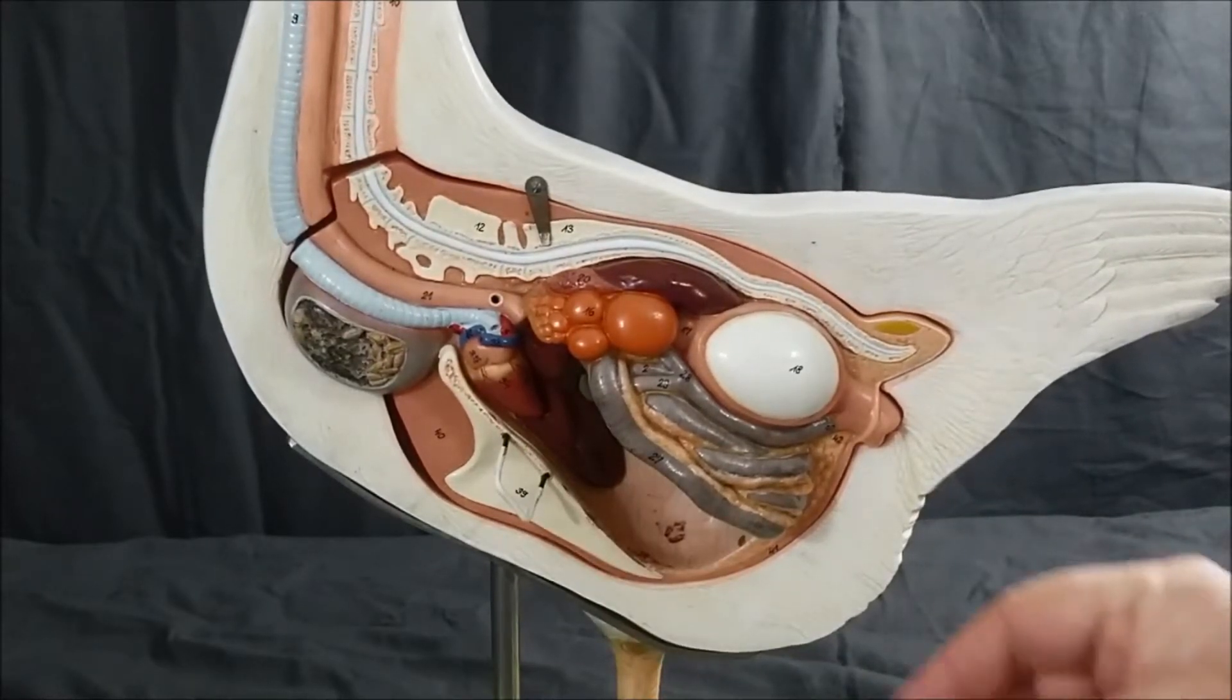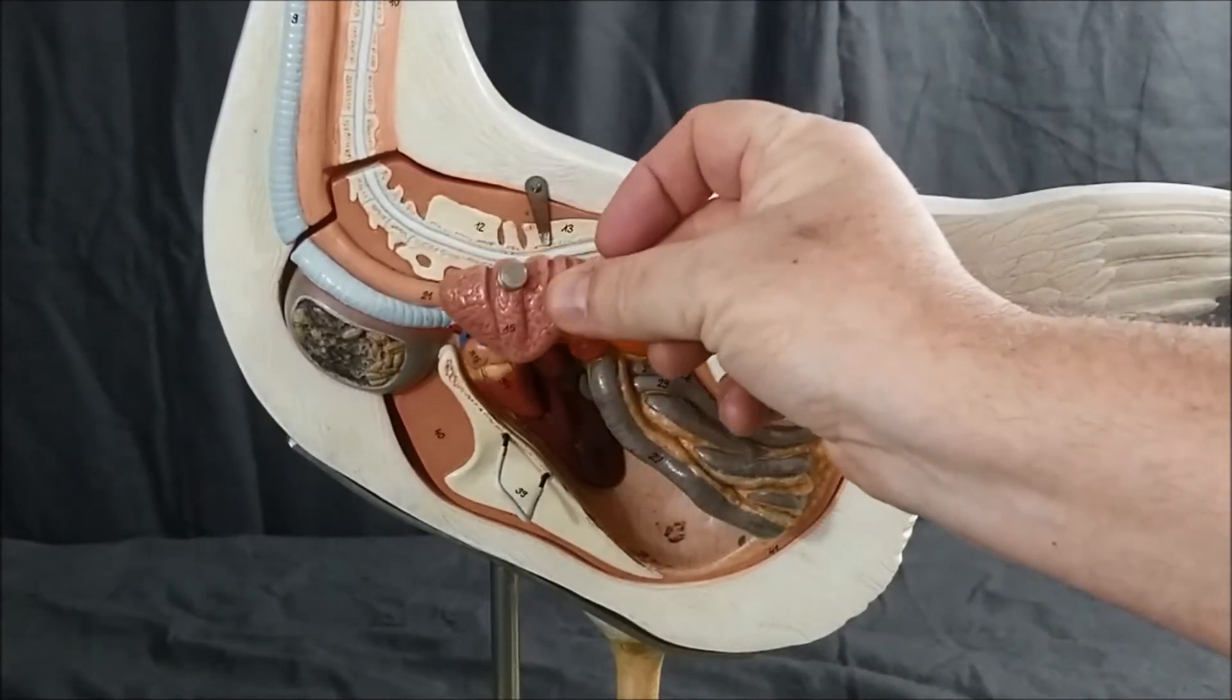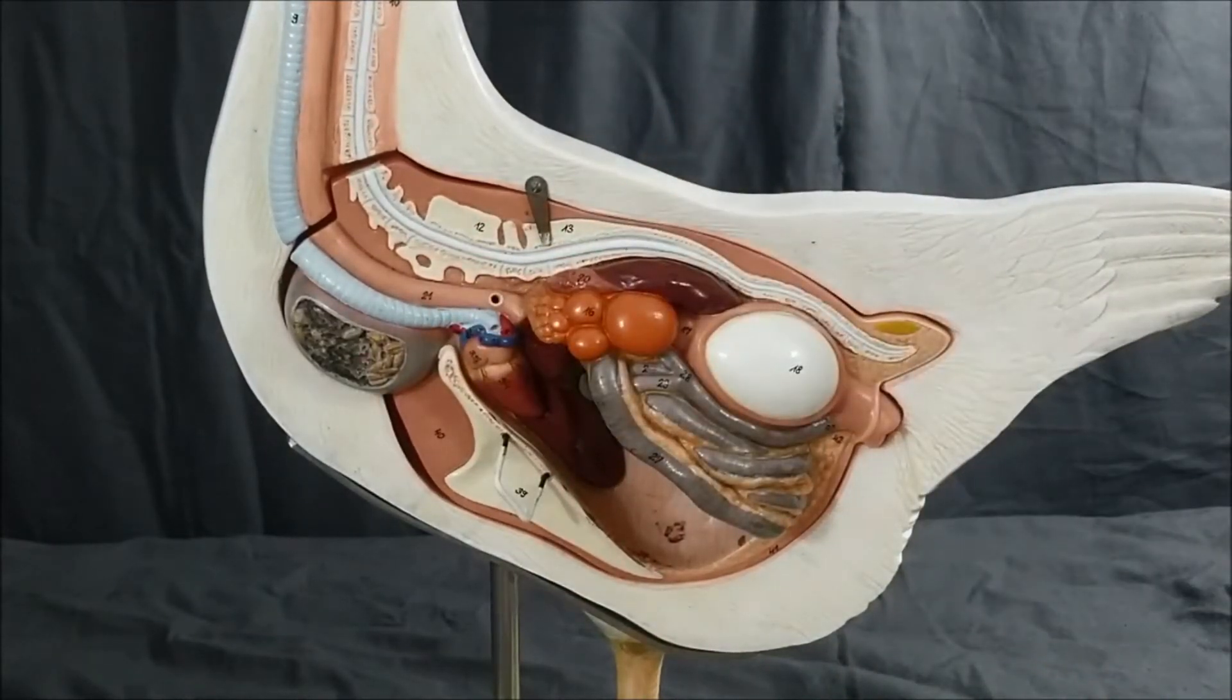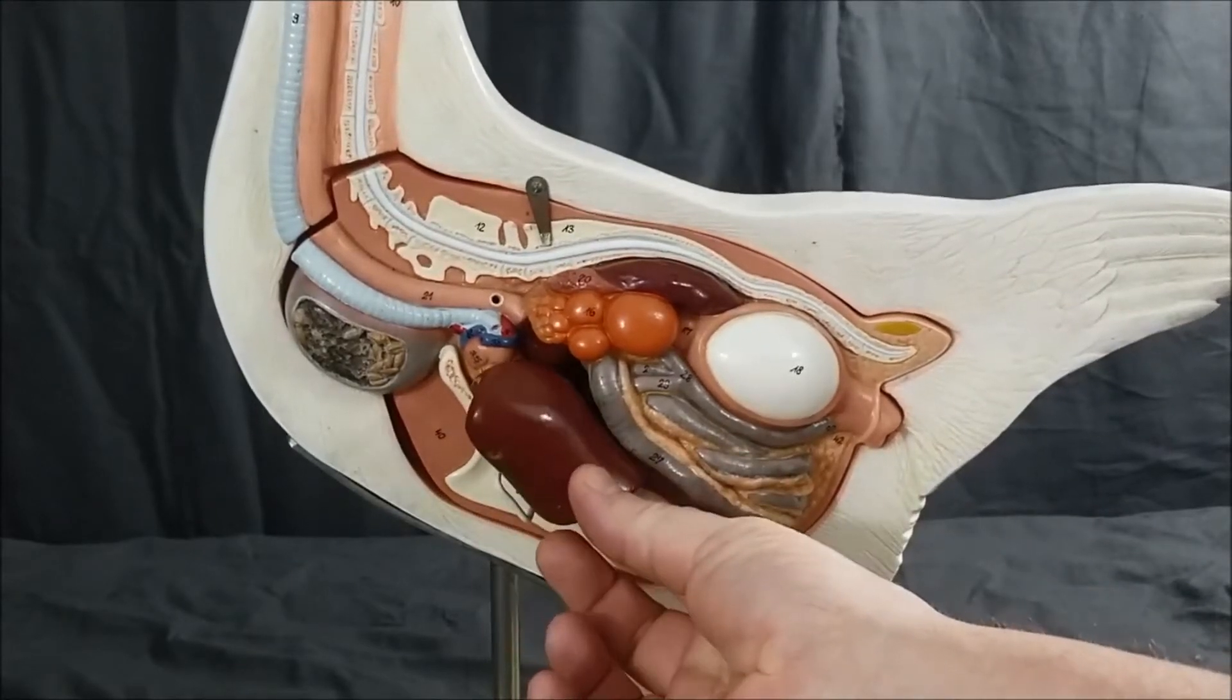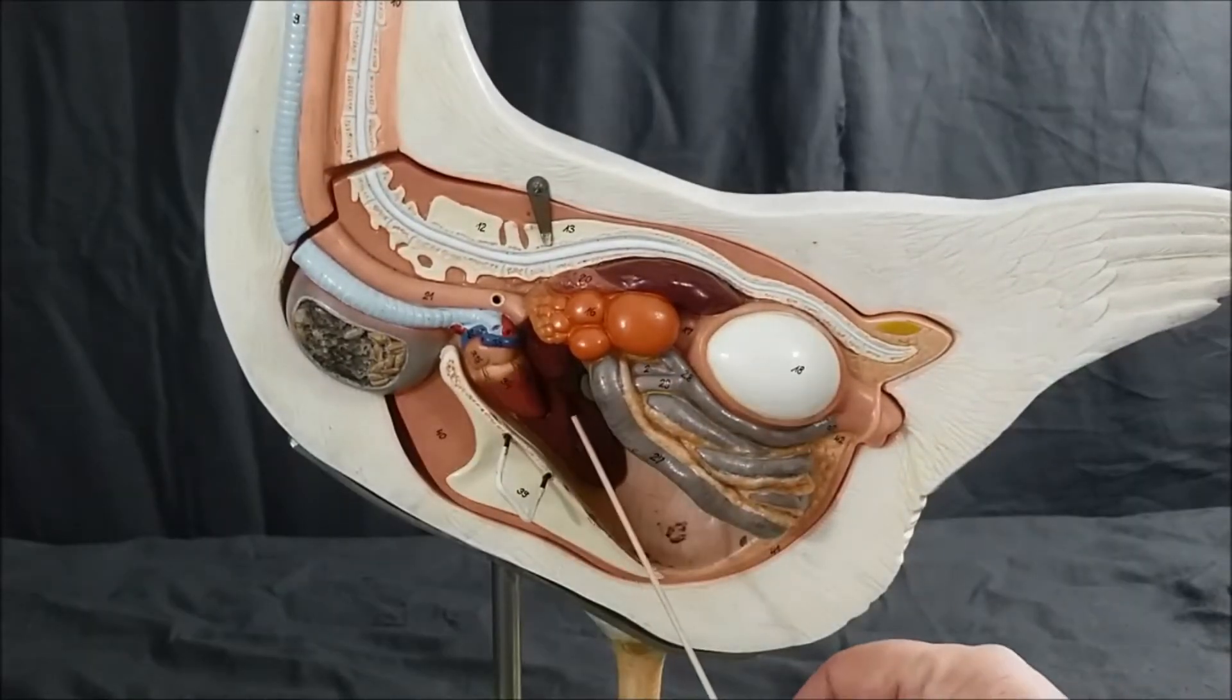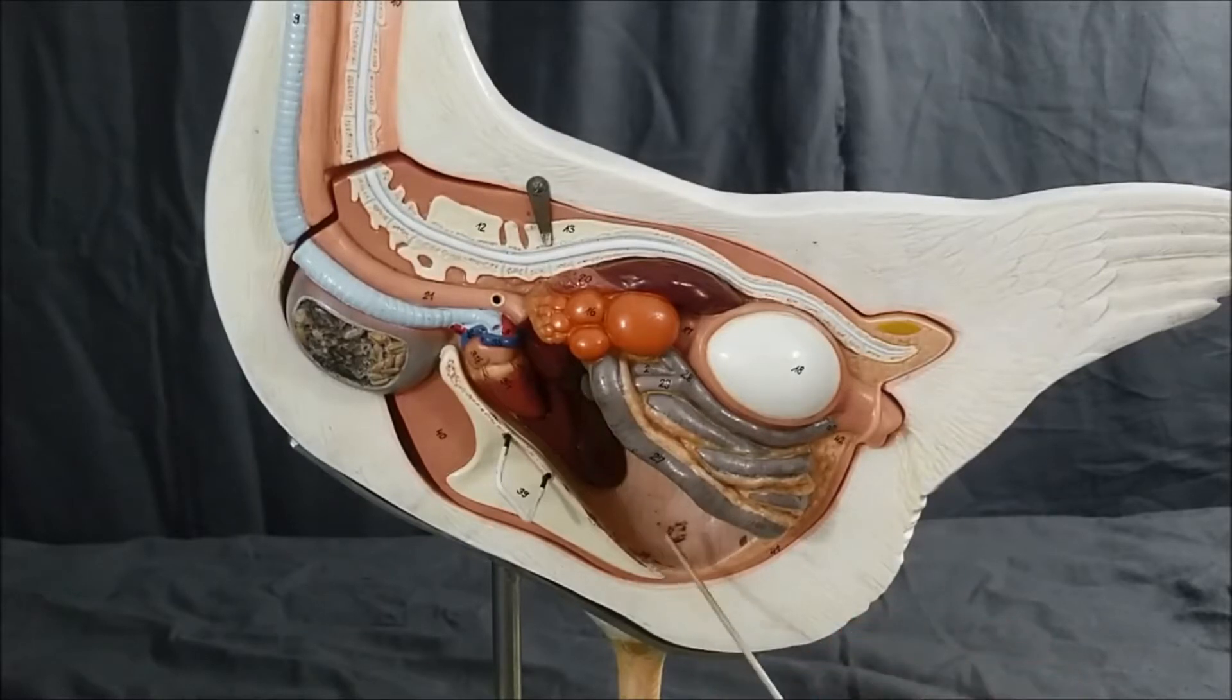Another part that's not attached to the model currently is the lung, which would go right here. And a lobe of the liver, which would go right about here. The green structure up in here is the gallbladder, and the membrane shown here is the parietal peritoneum.